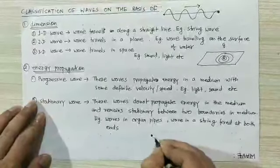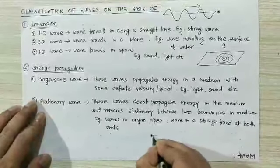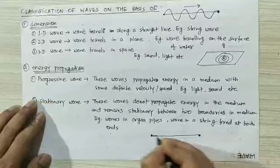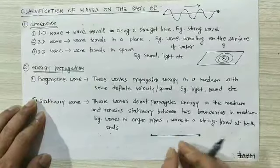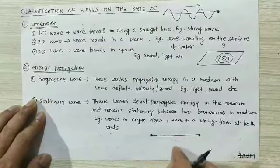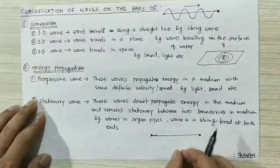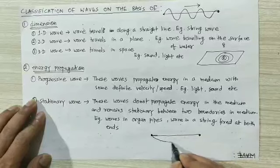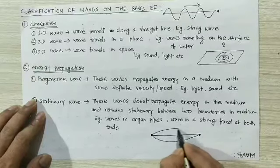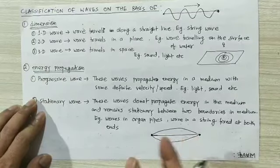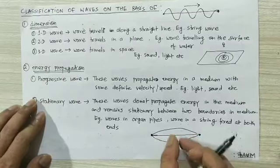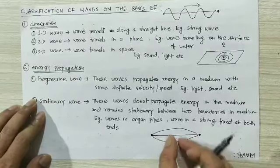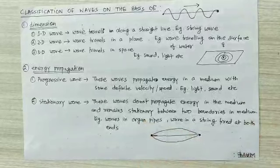Suppose it is a string fixed at both ends. Now I am just pulling it down and then releasing it. A wave will generate here, and this string will keep going up and down. Progressive wave and stationary wave — we will study later in very deep detail.